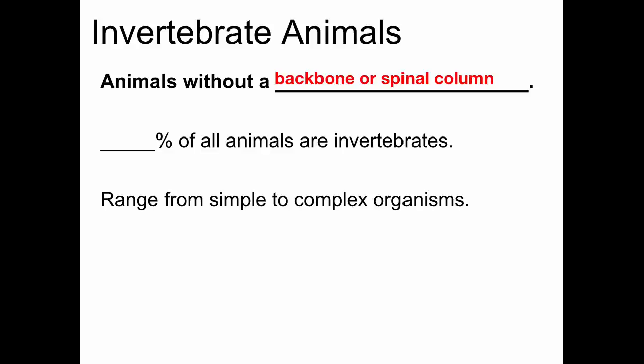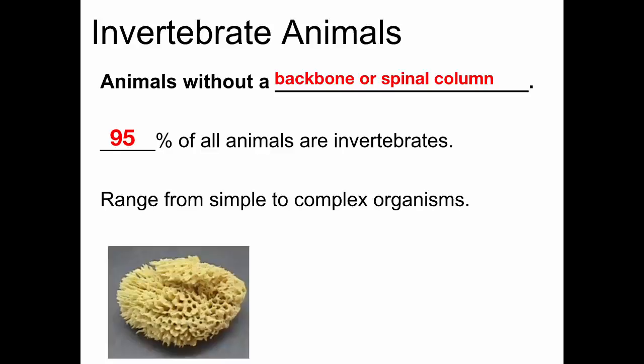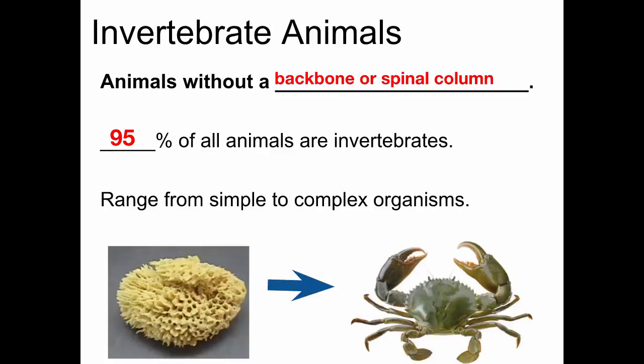We're going to start talking about invertebrates — animals that don't have a backbone or a spinal column. Are most animals vertebrates or invertebrates? Vertebrates are only about 5% of the animals that have been identified; 95% are actually invertebrates. The biggest group would be insects — there's a huge number of different types, and those are all invertebrates. Invertebrates range from very simple things like the sponge to much more complicated organisms like the crab.